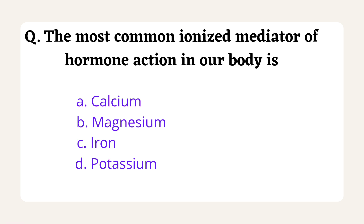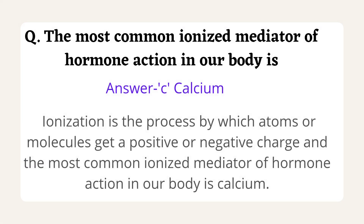The first question is: the most common ionized mediator of hormone action in our body. The options are calcium, magnesium, iron, and potassium. This question was asked in RUHS Nursing Entrance Exam 2016. They are asking about a common ionized mediator helping the hormone perform its function. Ionization is the process by which atoms or molecules acquire a positive or negative charge. The answer is calcium.